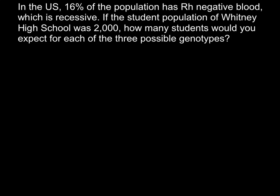So here is a problem. In the United States, 16% of the population has Rh-negative blood, which is recessive. If the student population of Whitney High School was 2,000, how many students would you expect for each of the three possible genotypes?